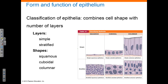Cell shape can be classified as squamous, which are thin flat cells; cuboidal cells, which are box-like square shapes when in cross-section; and columnar cells, which are tall rectangles in the cross-sectional view. Simple epithelial refers to a single layer of each of these types of cells, whereas stratified refers to multiple layers of those cells stacked upon each other.